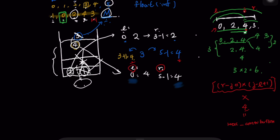This is how we find the contribution of each element as a maximum across all subarrays. The minimum contribution works with the exact opposite logic of the maximum — I'll leave that for you to try. Now let's jump to the coding part.